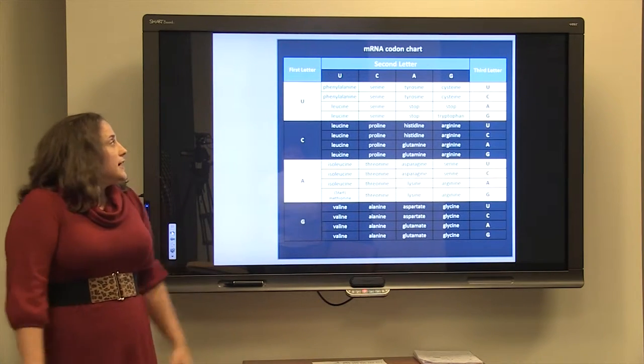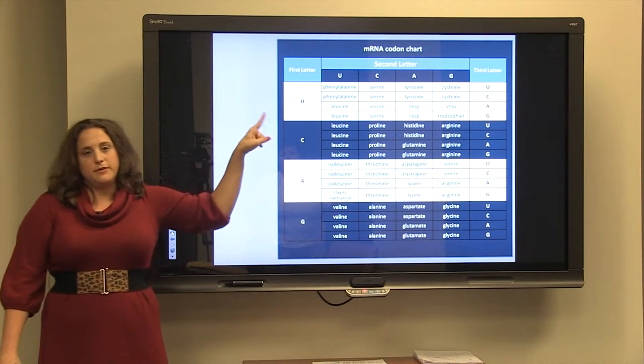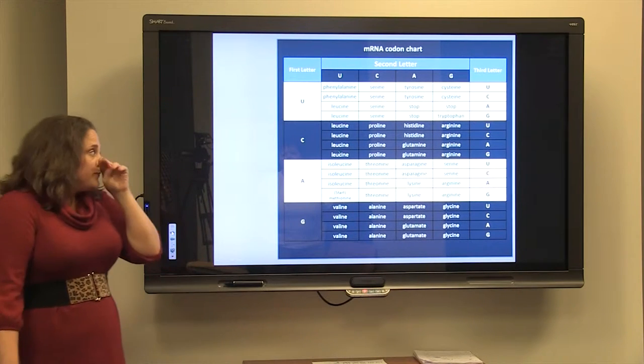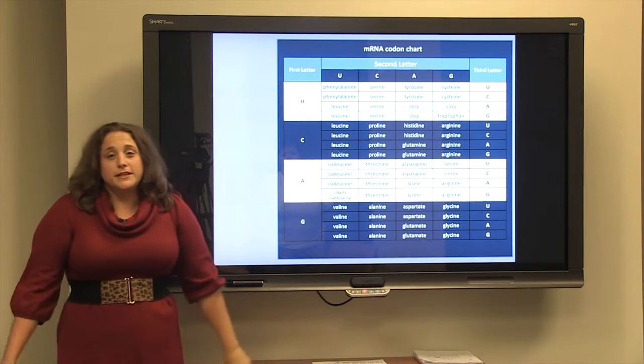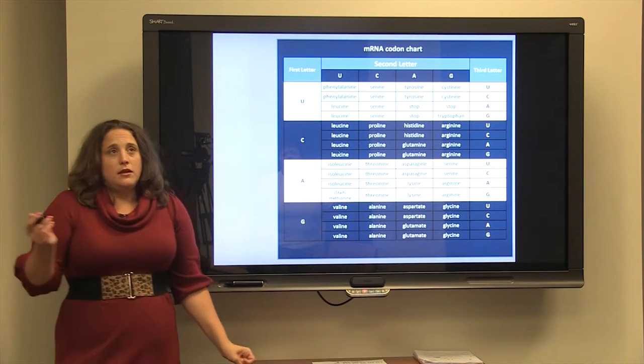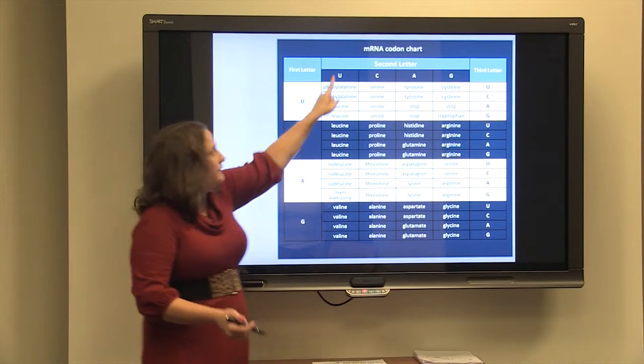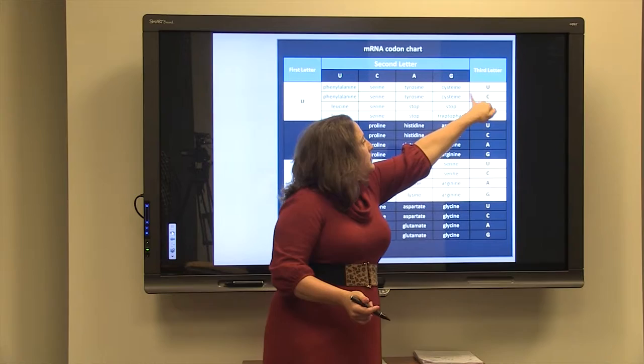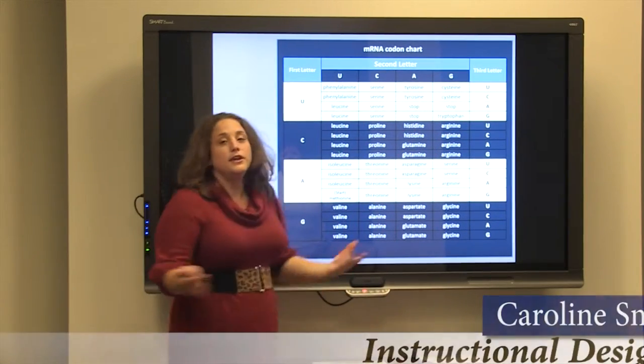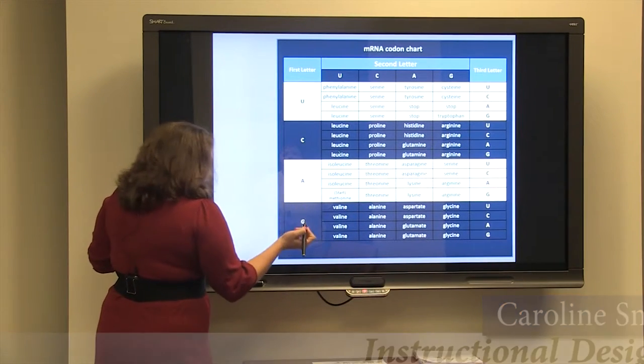And I hope that it's not too intimidating because you don't have to memorize this. It should always be provided for you, but you do need to know how to use it. And it works similarly to a map, or even GPS to a certain extent, with a triangulation of three or more satellites. We're just triangulating from these parts that represent the nitrogen bases on the mRNA.